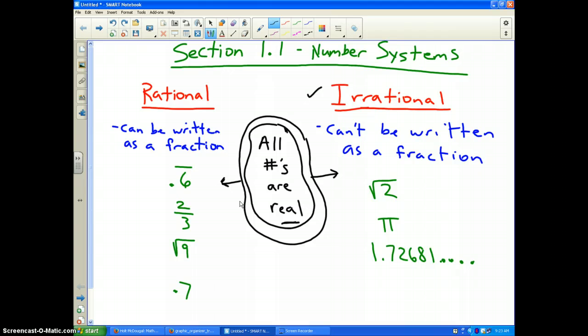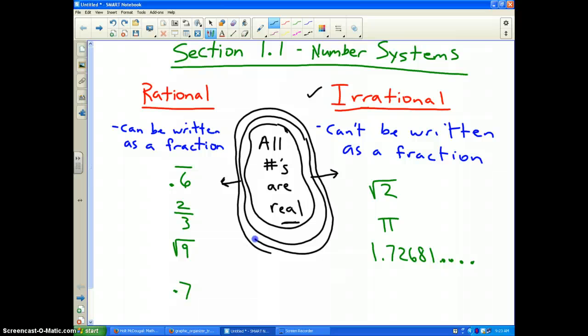Number systems refer to a name of a group of numbers within all the numbers that you have learned in your life so far. First and foremost, as I've written in the middle of the smart board, all numbers that you can possibly name for me, everything that you can possibly tell me, is called a real number.